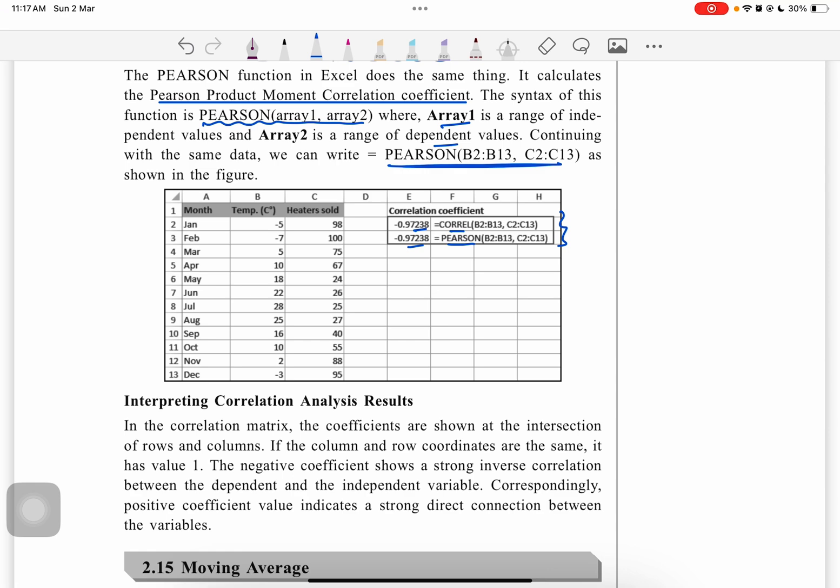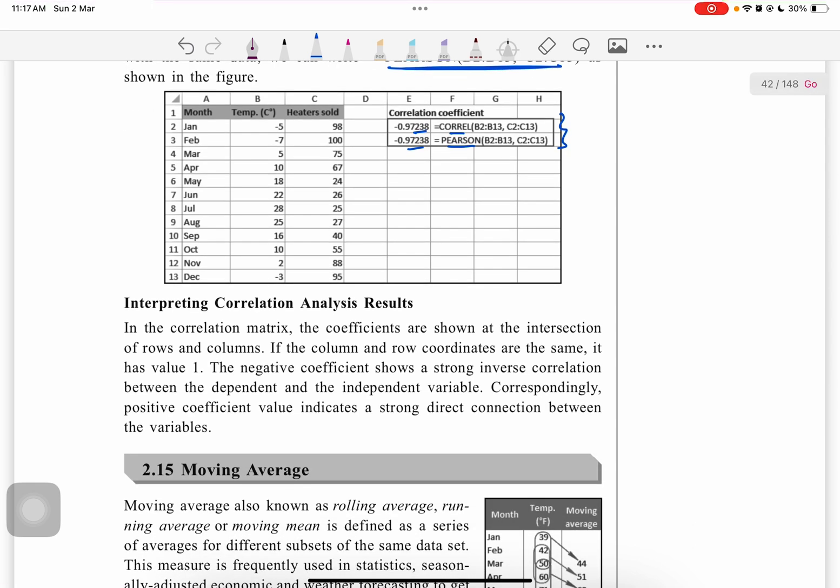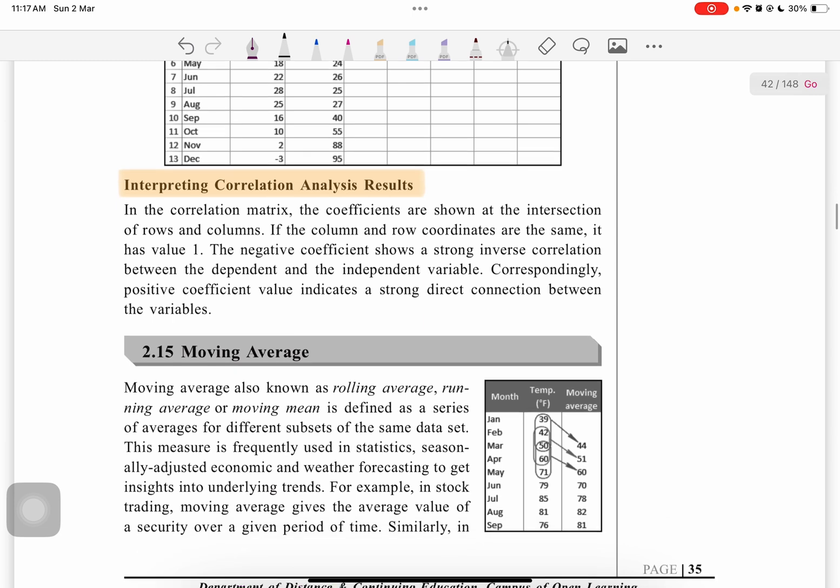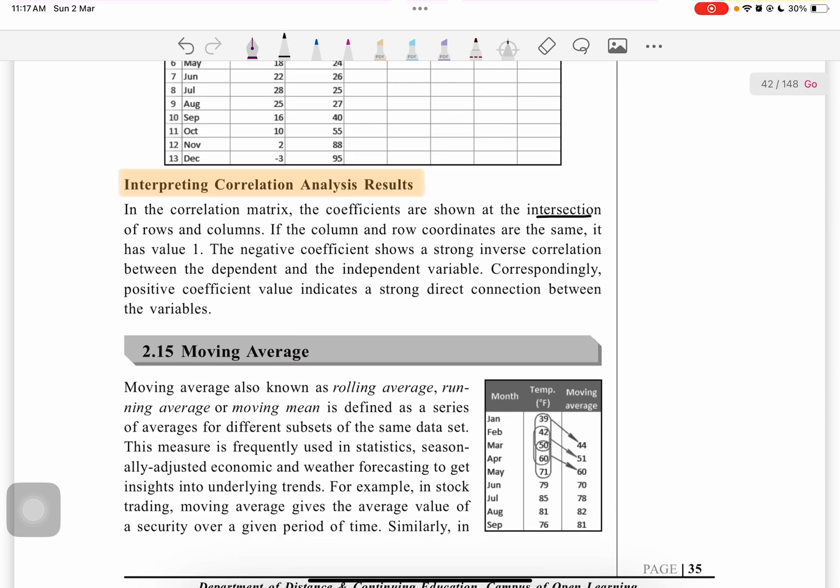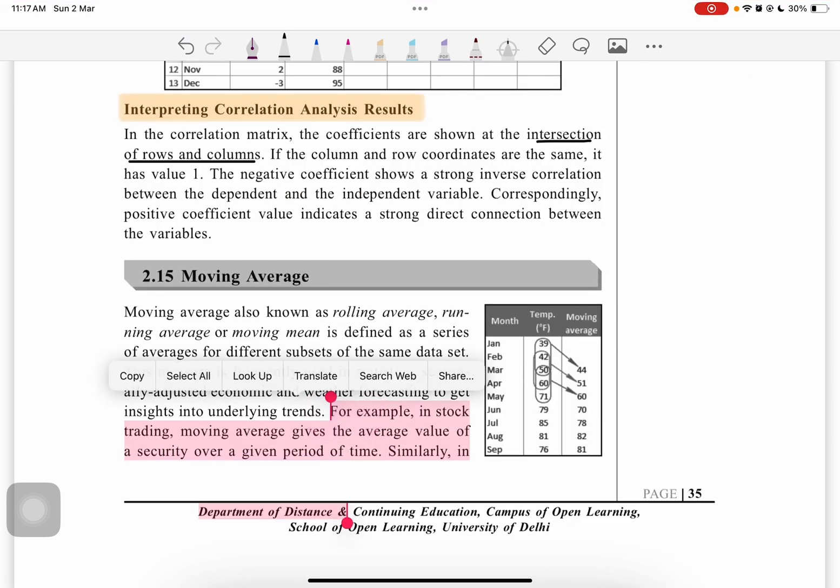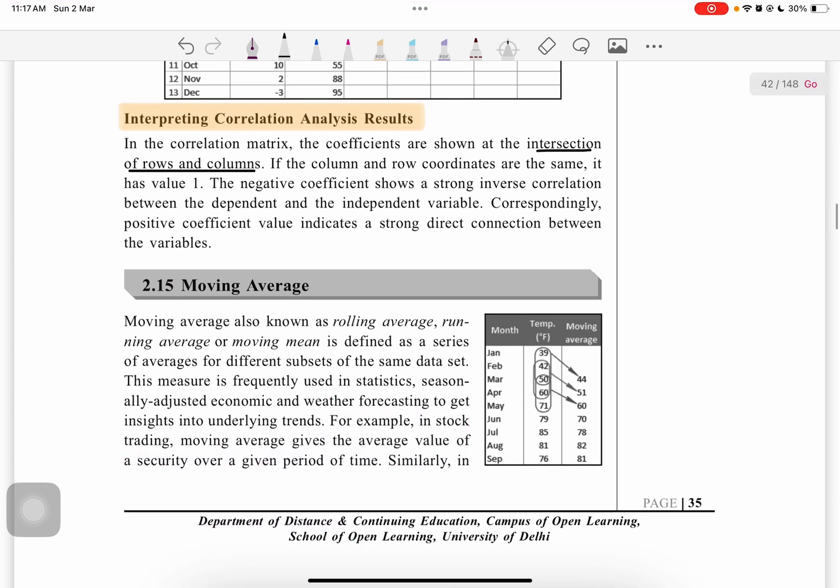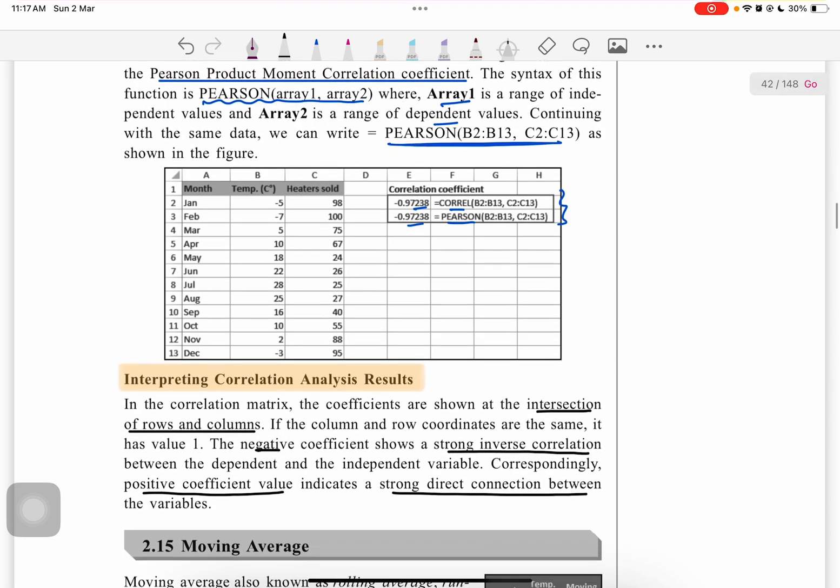Then, interpretation of correlation analysis results. In a correlation matrix, the coefficients are shown at the intersection of rows and columns. If column and row coordinates are the same, it has value one. A negative coefficient shows a strong inverse relationship between dependent and independent variables, while a positive coefficient value indicates a strong direct connection between the variables.